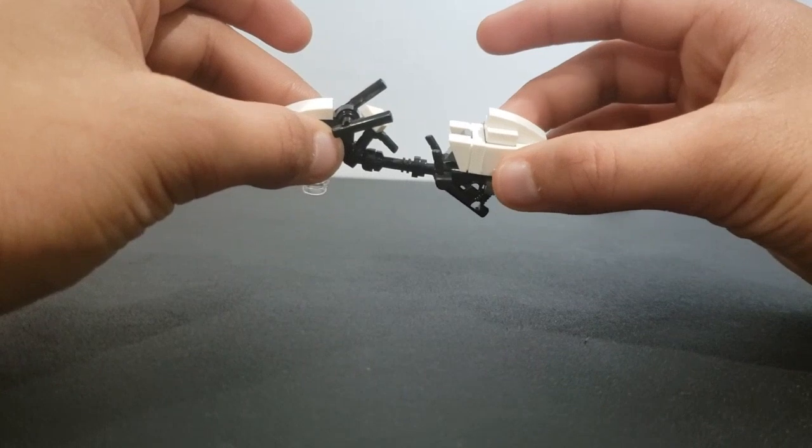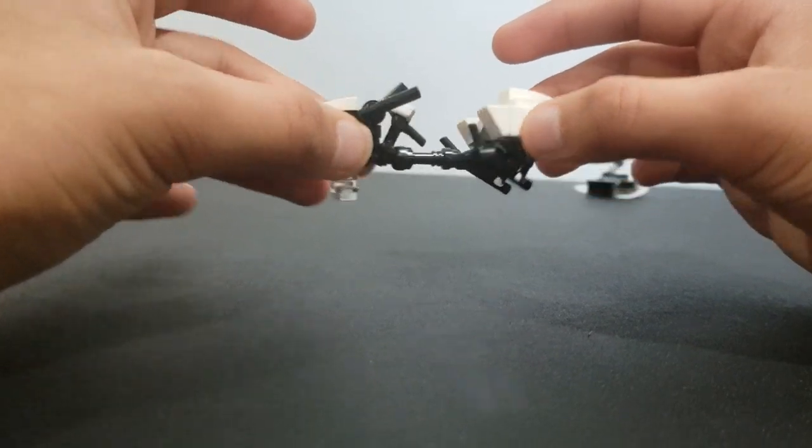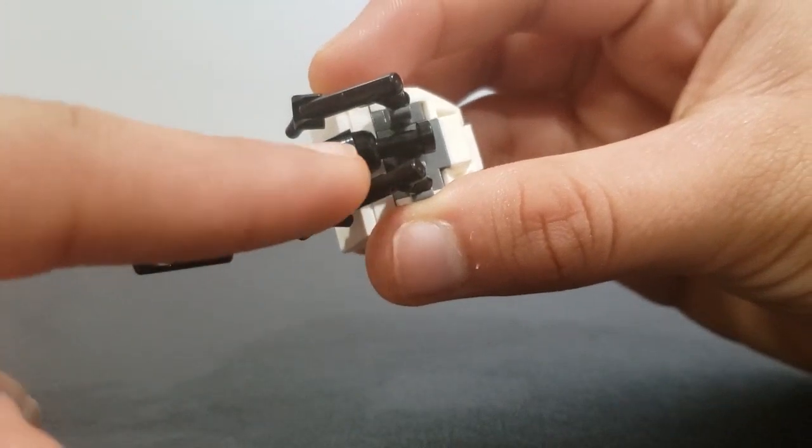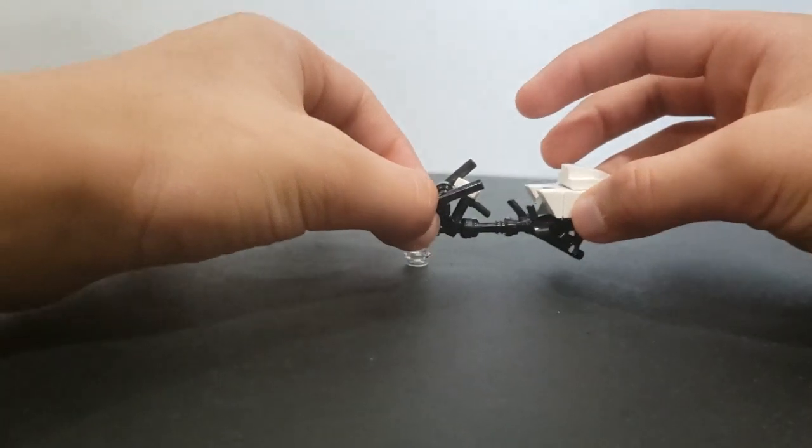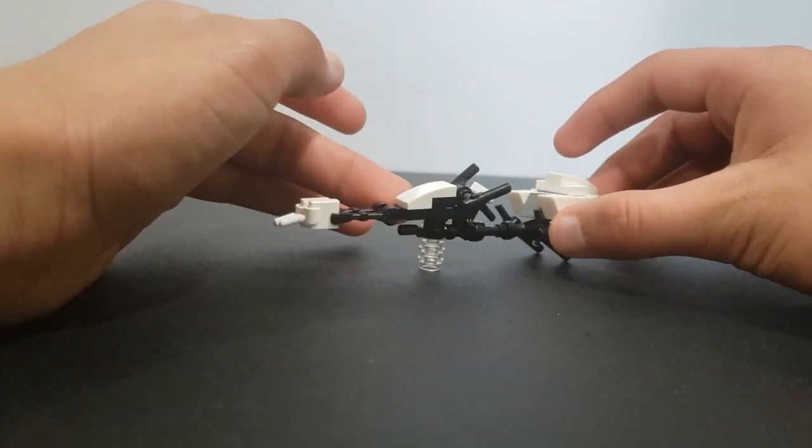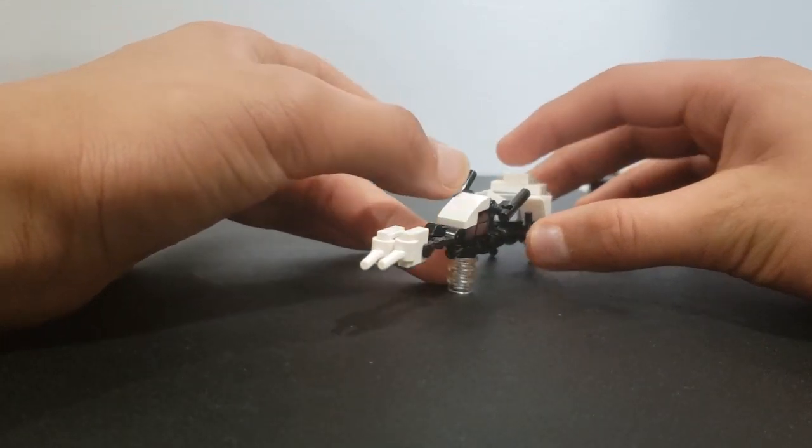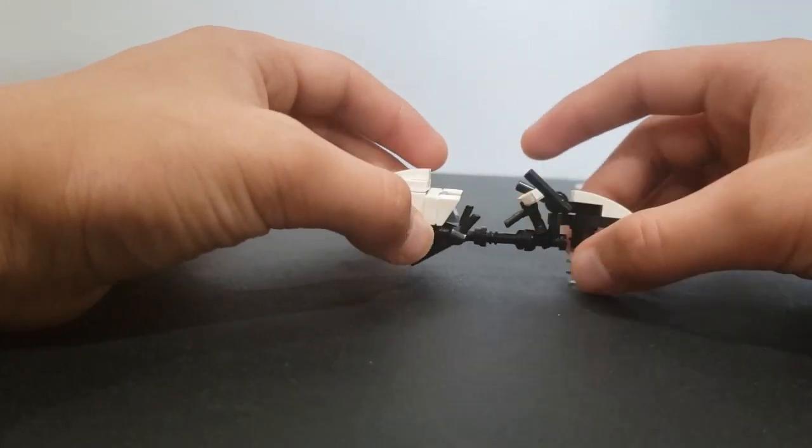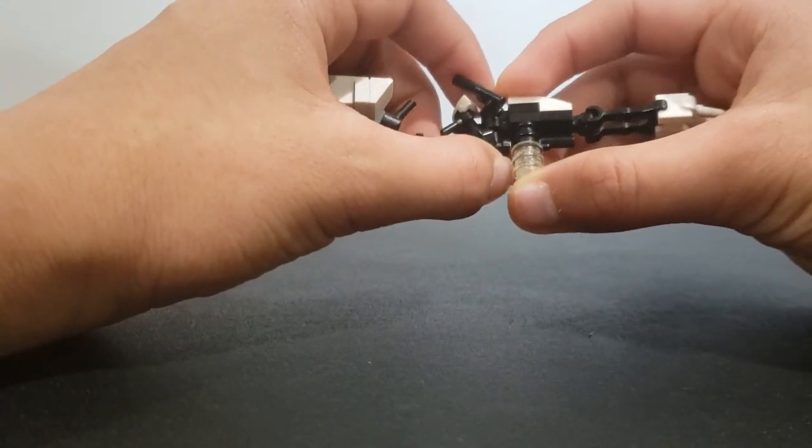I put an ice cream cone piece right here in black to make it look better in my opinion, and I think it's really just pretty awesome. The proportions are pretty correct, it looks mini-fig scale.